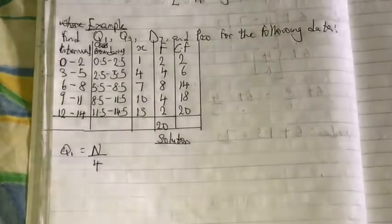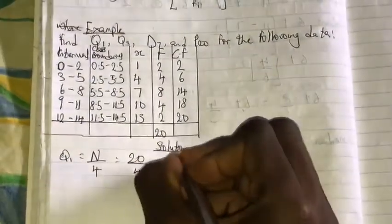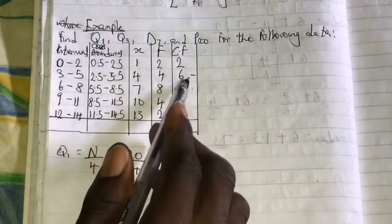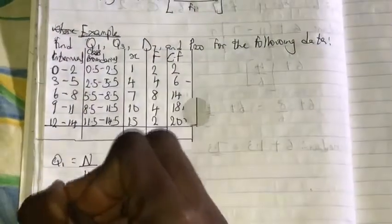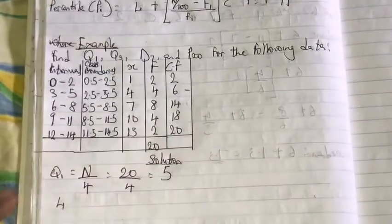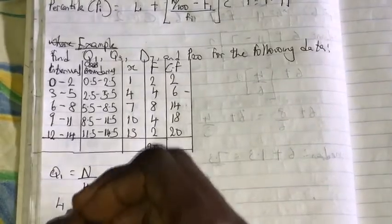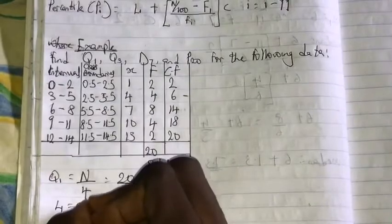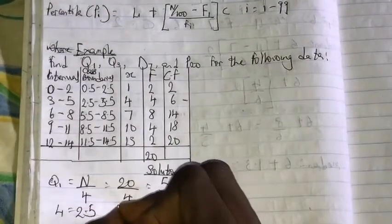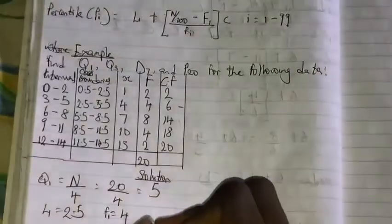n over four, so n here is 20, therefore 20 by 4 is 5. Q1, these are cumulative frequencies, falls under 6. Therefore our Li, now I have to get class boundaries, our lower class boundary here is 2.5. Our frequency is 4.